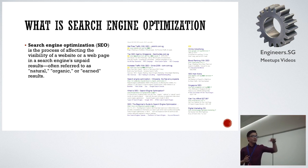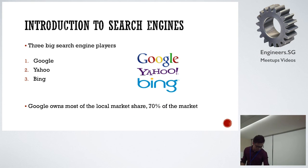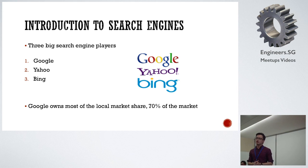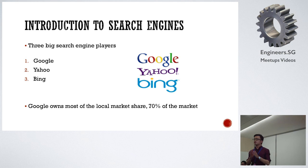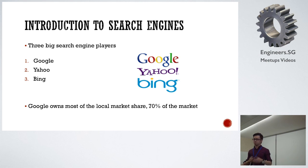How do you actually rank for SEO? You guys know the three big players: Google, Yahoo, and Bing. In Singapore, Google takes up about 70% of the SEO search traffic, which is why we're going to share more on Google. Yahoo and Bing actually share the same results — their search system is linked together, so if you search SEO on Yahoo, the results are the same as on Bing.